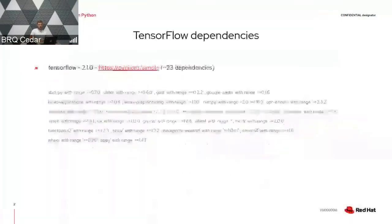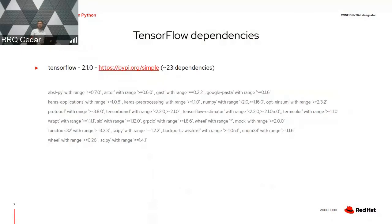If we take a look at TensorFlow, we can pick one specific version to simplify things a bit. Then we can have TensorFlow in version 2.1.0 installed from PyPI, the Python Package Index, and we can see 23 dependencies. These 23 dependencies are in the form of a dependency name and version range specification that needs to be satisfied in order to install TensorFlow.